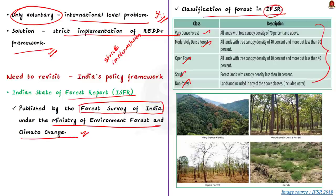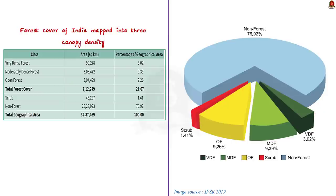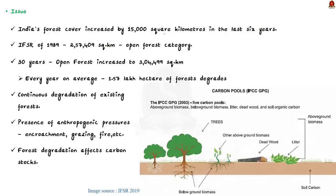Forests in India are mapped into three classes — very dense forest, moderately dense forest, and open forest — based on their canopy density. This table highlights the amount of forest under these categories. The data is taken from the Indian State of Forest Report 2019. India claims that it increased its forest cover by 15,000 square kilometers in the last six years.